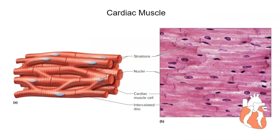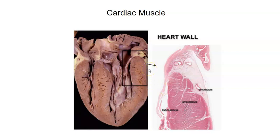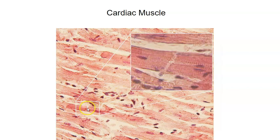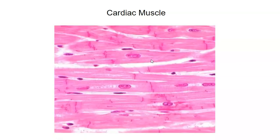Here's cardiac muscle. Notice the cells are branching. There is one nucleus per cell, and it's located in the middle — not on the perimeter like in skeletal muscle. The most important features to look for, besides the striations, are the intercalated discs connecting adjacent cells. Cardiac muscle is only found in the walls of the heart. In a heart section, you can see the myocardium and identify intercalated discs, single central nuclei, and clear striations.